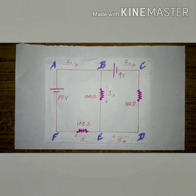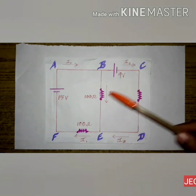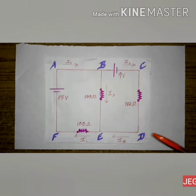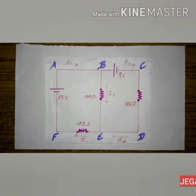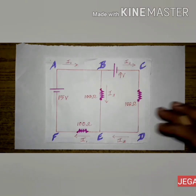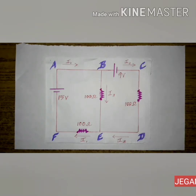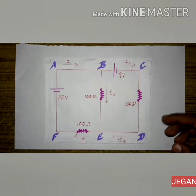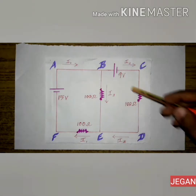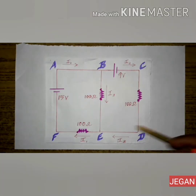Hi everyone. Today we are going to calculate the values of current in the given circuit. To calculate the current, we can't use Ohm's law because it is not a simple circuit. It is a complex circuit. So we can use Kirchhoff's rules to find the amount of current in various parts of the given circuit.